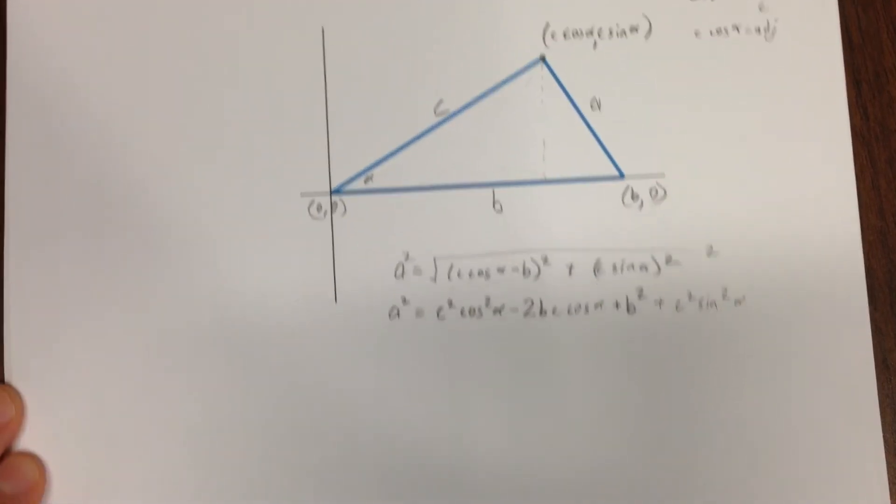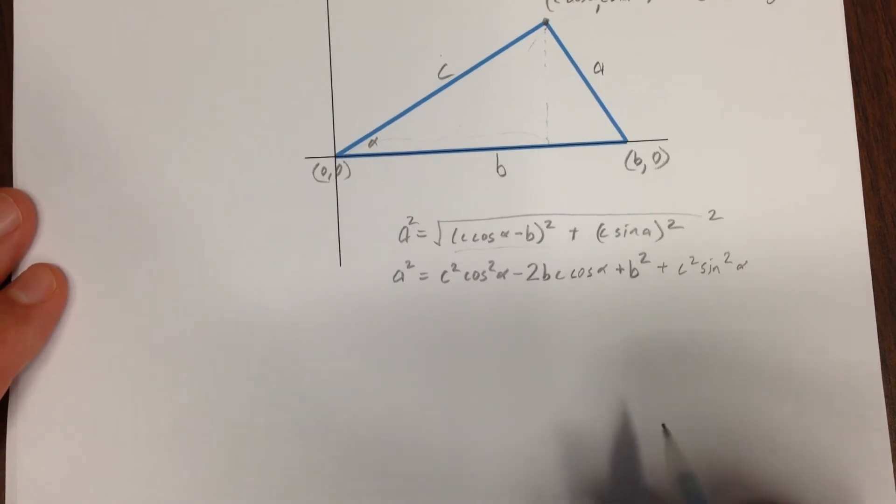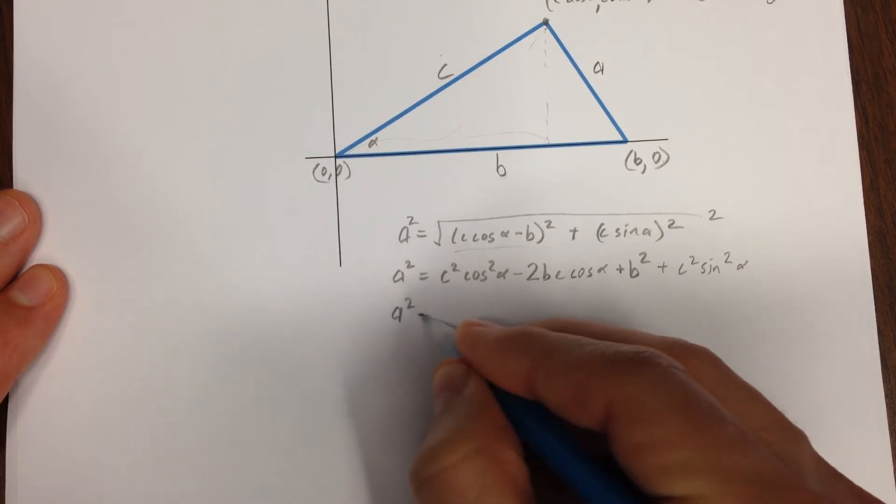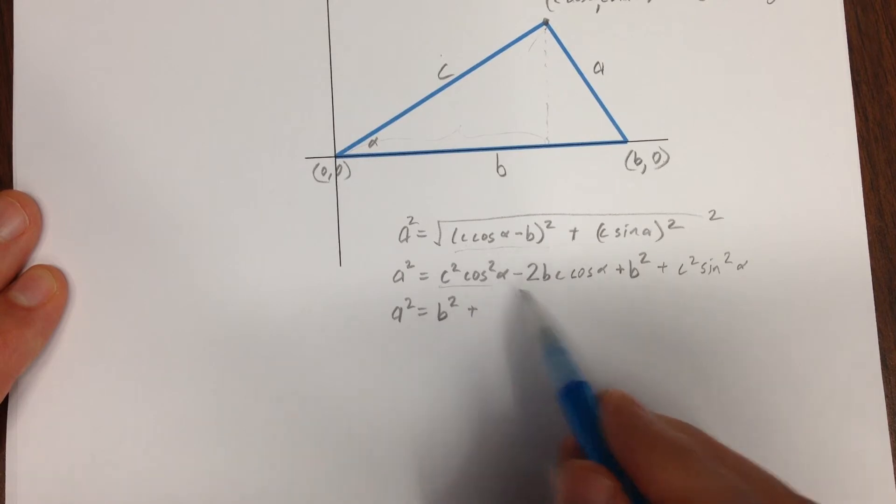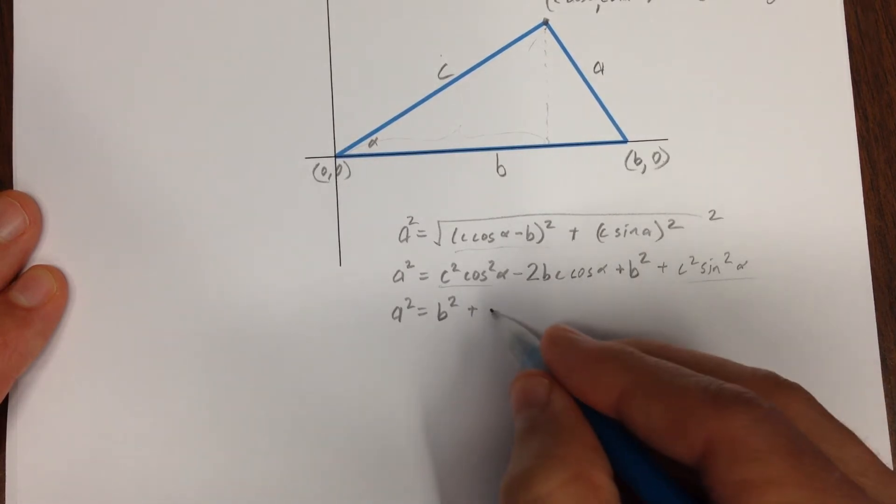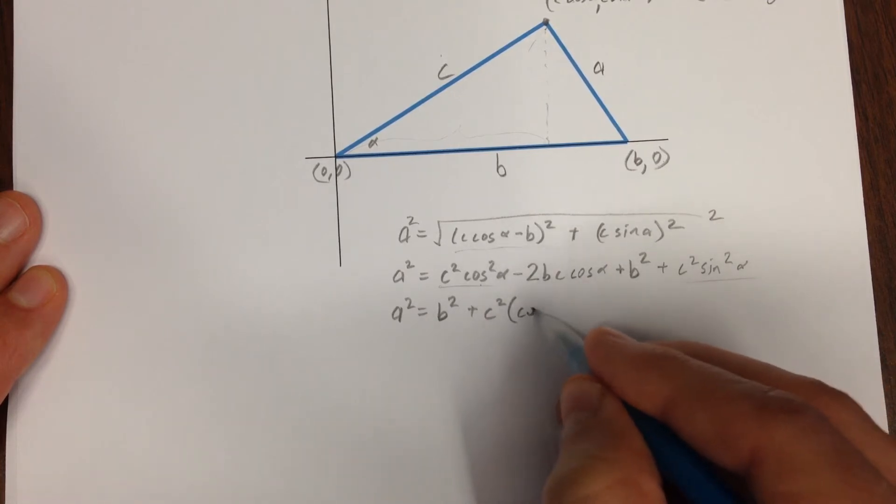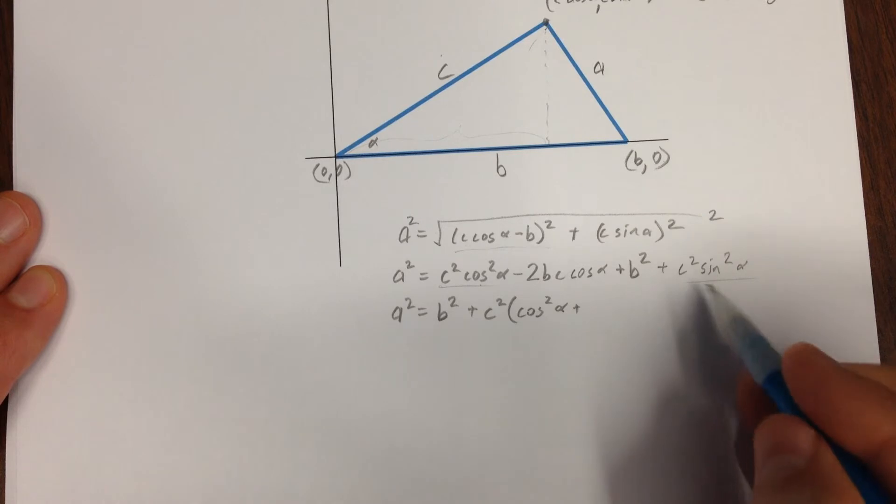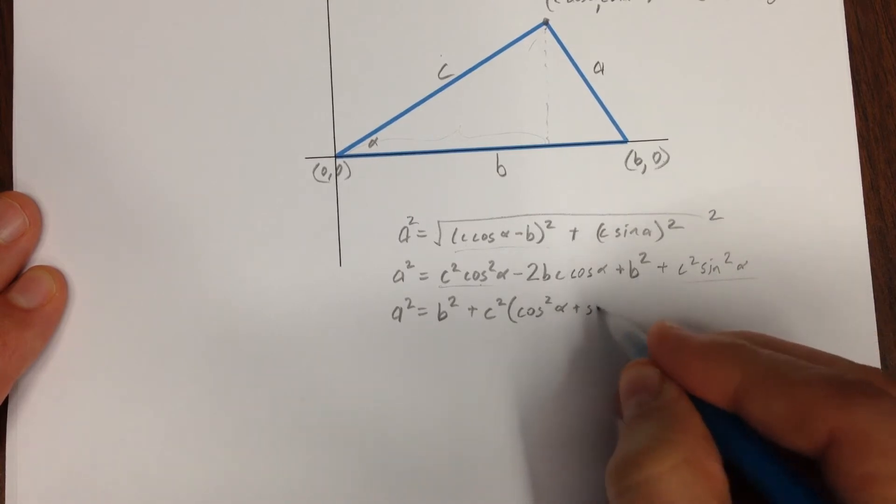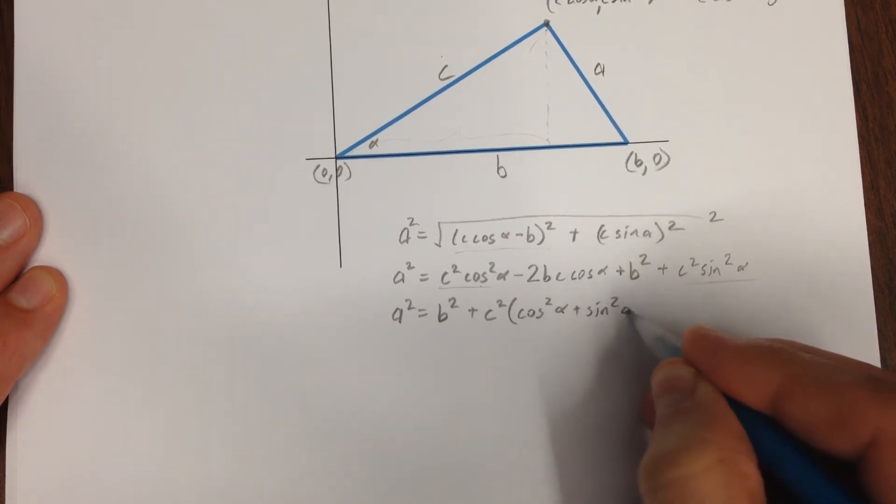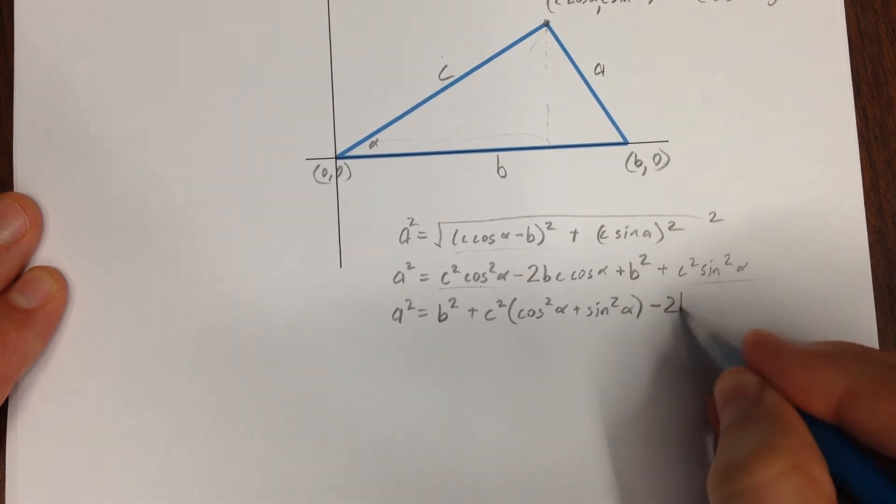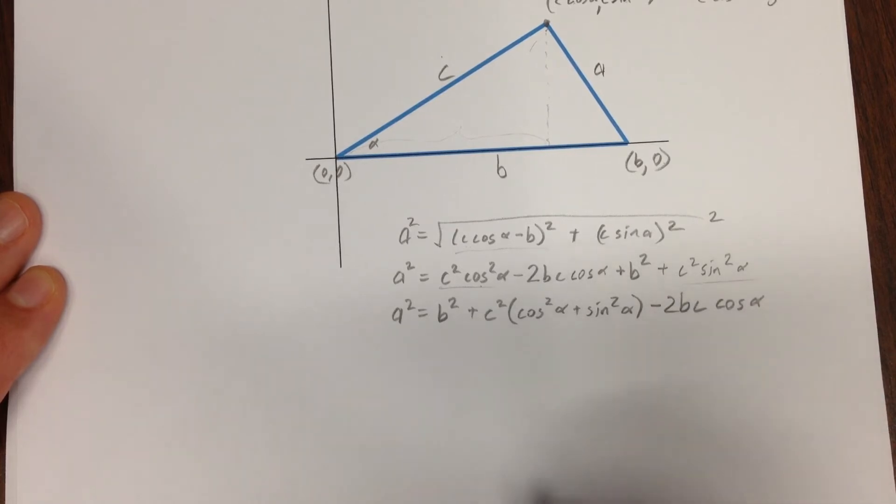Now that might strike you as a whole lot of mess, but the point is I have an a squared, a b squared, I have two terms here that have c squareds in them. So let me pull the c squared out. I have c squared times cosine squared alpha, and then c squared times sine squared alpha. Then what's left? 2BC cosine alpha subtracted.